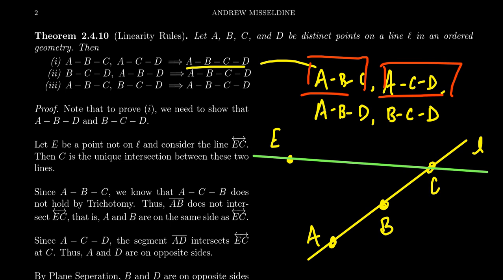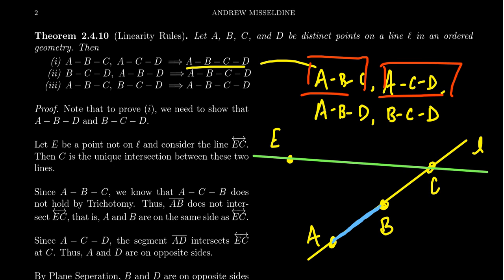By assumption, B is between A and C. By trichotomy, C is not between A and B. Since trichotomy allows only one betweenness relationship among three points, and B is between A and C, the line segment AB cannot intersect the line EC. If it did, the intersection point — being a subset of line L — would have to be C, but C is not between A and B by trichotomy. Therefore, A and B are on the same side of line EC.